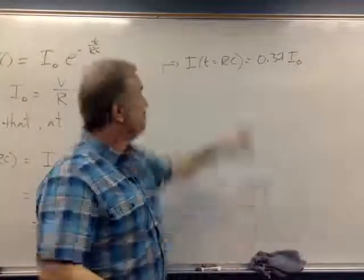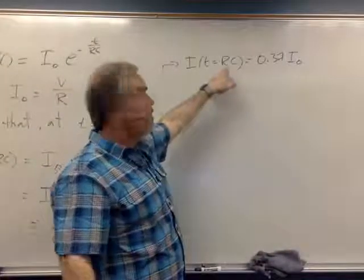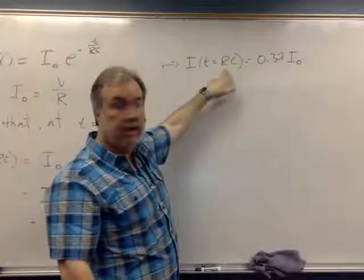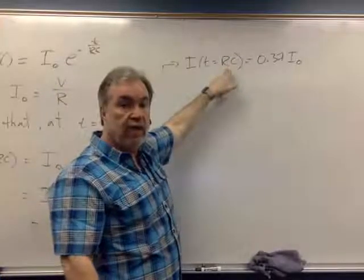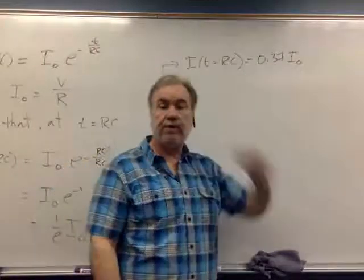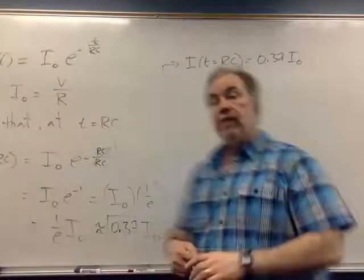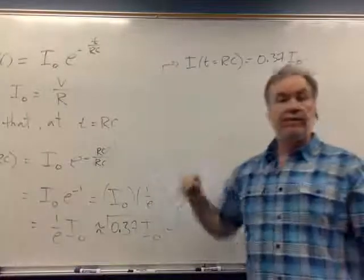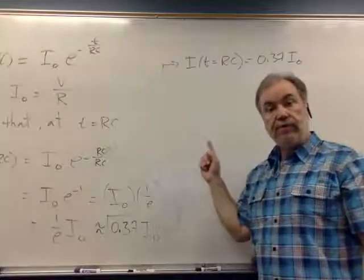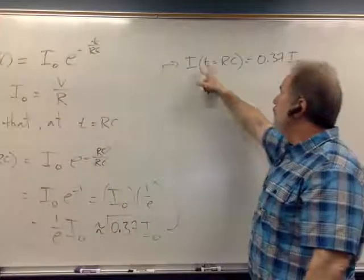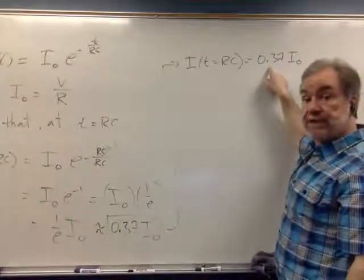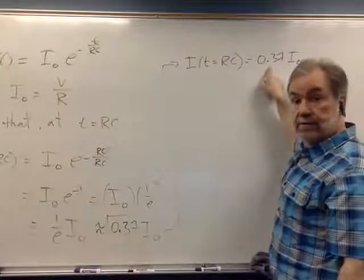And the neat thing about this relationship here is that it is true no matter what the value of r and the value of c is. Somehow it is the value of r and the value of c multiplied together that tells you something interesting about the circuit. Specifically, how much resistance and how much capacitance there is in the circuit seems to dictate how much time it takes for the current to drop from its initial value down to about 37% of its initial value.